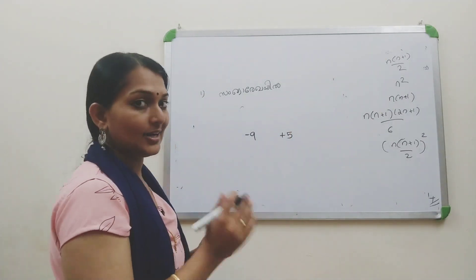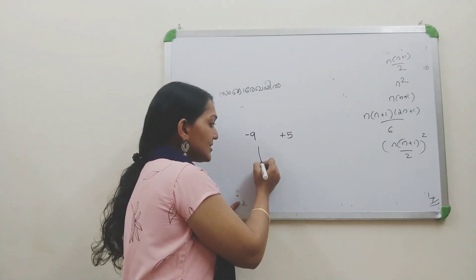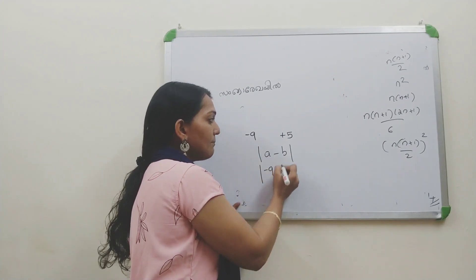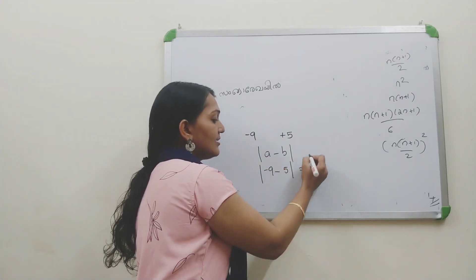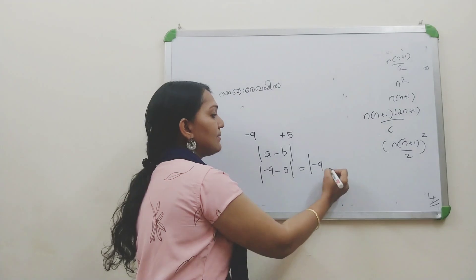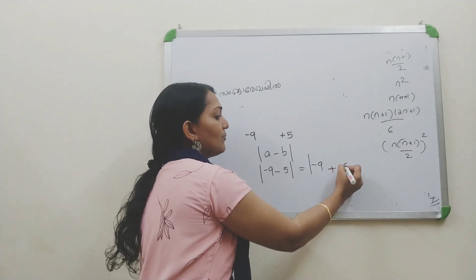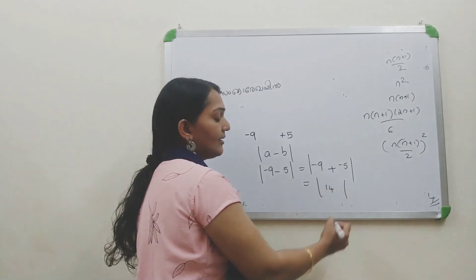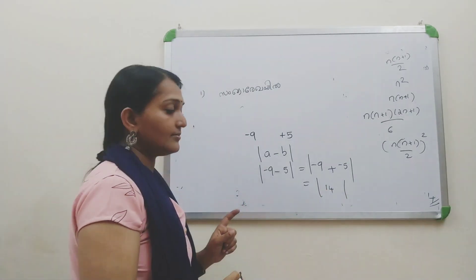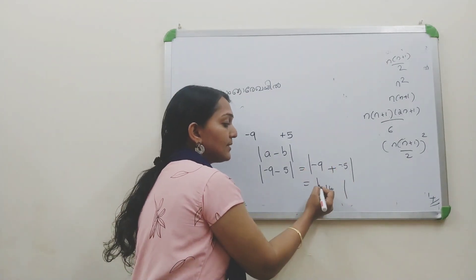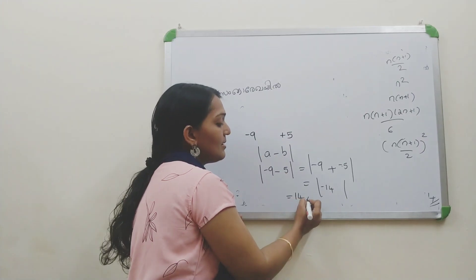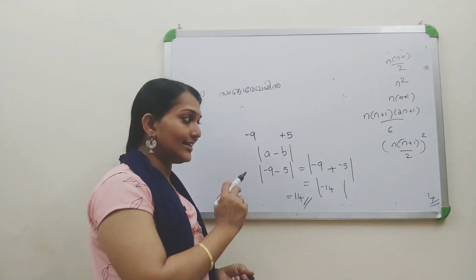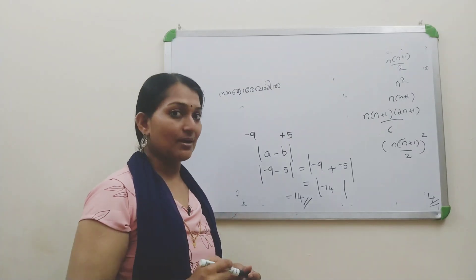Let's solve it. We have a minus b, where a is minus 9 and b is plus 5. Adding minus 9 and minus 5: 9 plus 5 equals 14, and the answer is 14. Write the answer in the common box. The next question follows.